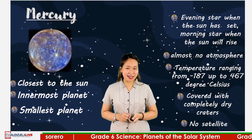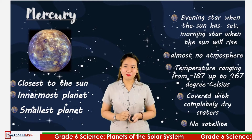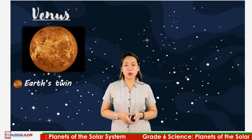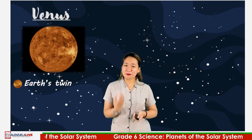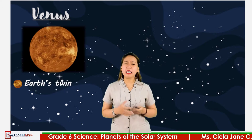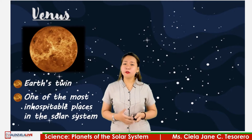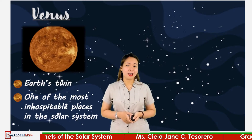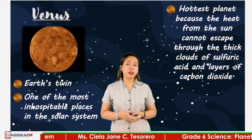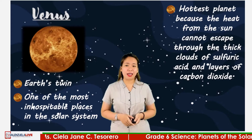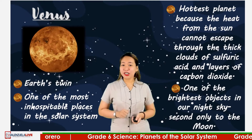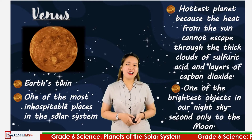The next planet after Mercury is Venus. Venus is considered as Earth's twin sister as it is almost as big as Earth. Though it is Earth's twin sister, its volcanic surface and extremely hot and dense atmosphere make it one of the most inhospitable places in the Solar System. It is considered the hottest planet because the heat from the Sun cannot escape through the thick clouds of sulfuric acid and layers of carbon dioxide. Venus is one of the brightest objects in our night sky, second only to the Moon, and it appears as either an evening star or a morning star.